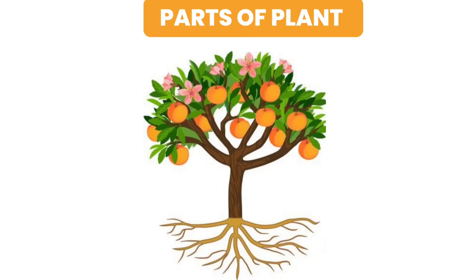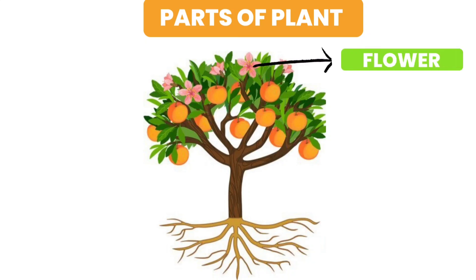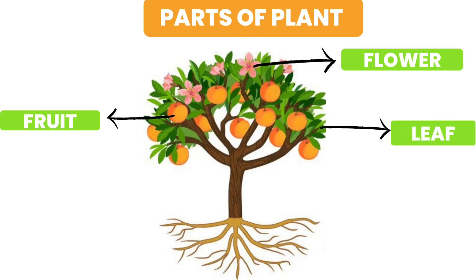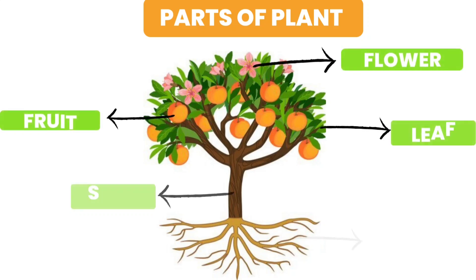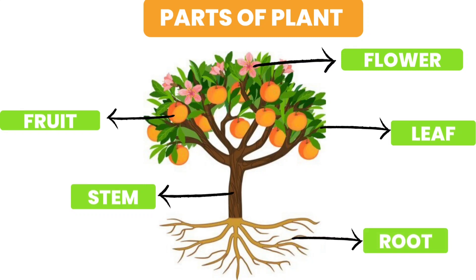Parts of a plant: flower, fruit, leaf, stem, root. These are the five main parts of a plant.